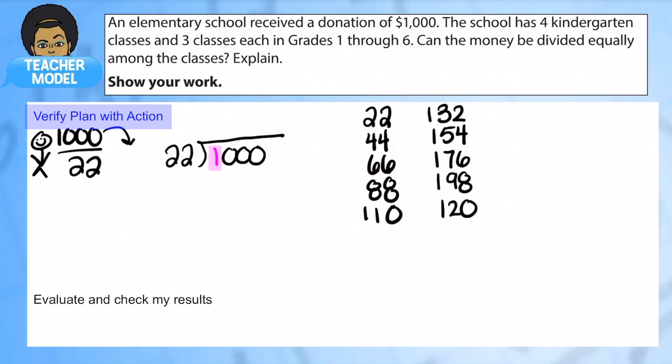1 divided by 22 is 0. 10 divided by 22 is 0. And now I have 100 divided by 22. So I can look at my list. How many 22s go into 100 without going over? 1, 2, 3, 4. I can't do 5 because that will go over. So let's put 4 here. And 4 times 22 is 88. I can subtract and I get 12. So let's bring down the 0.